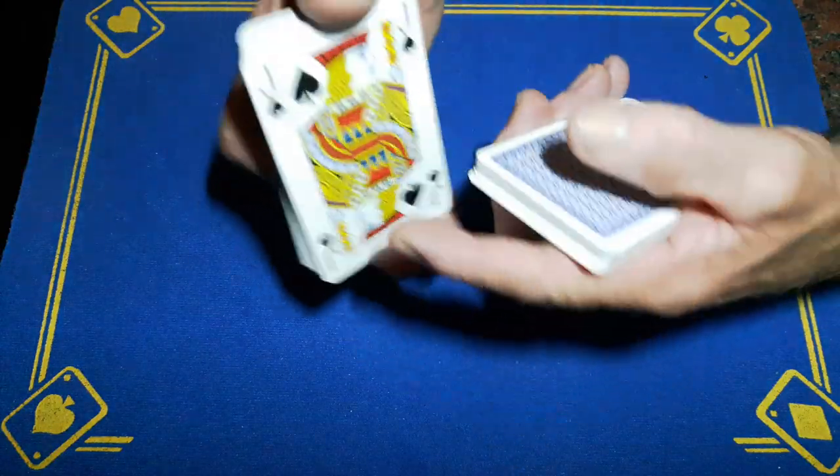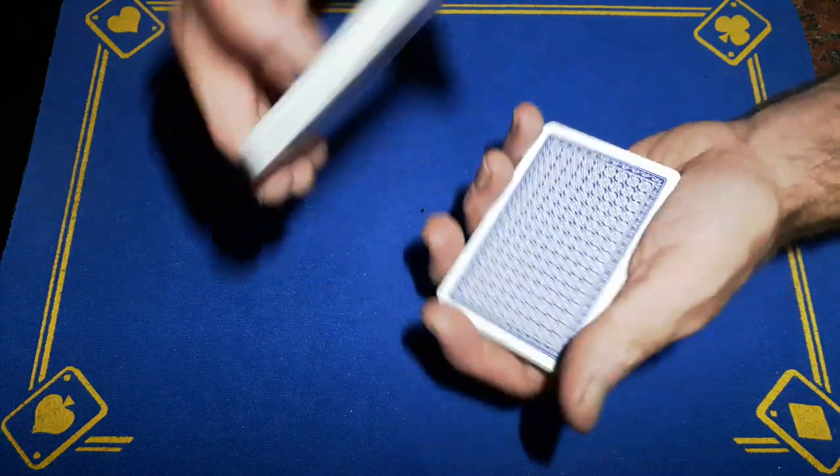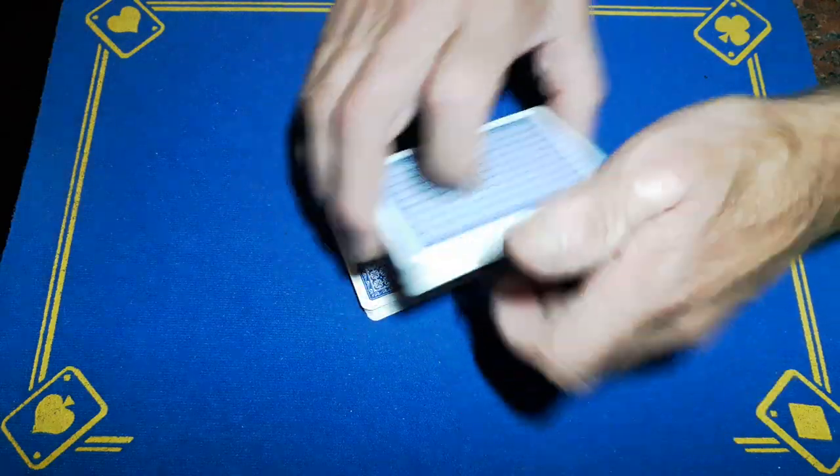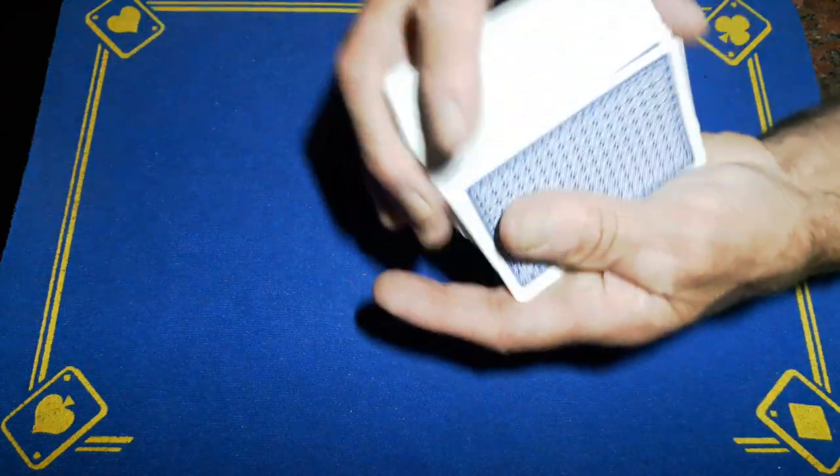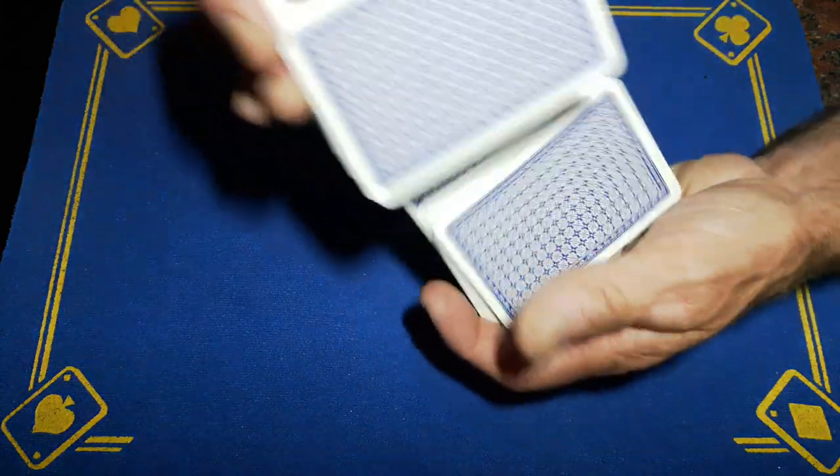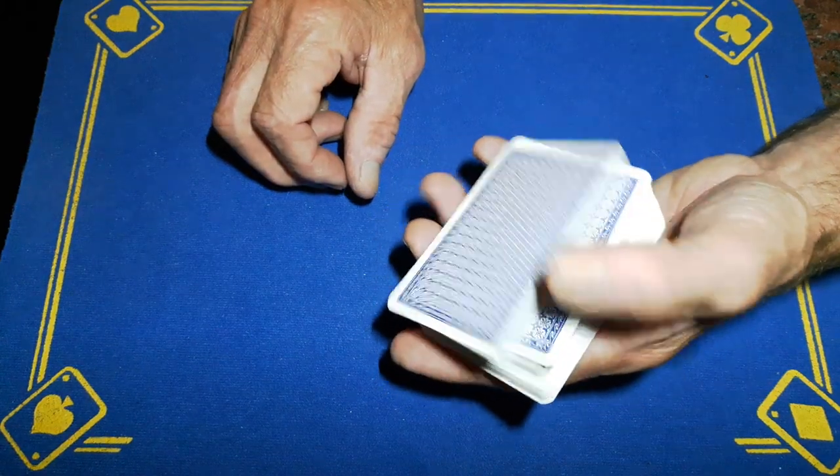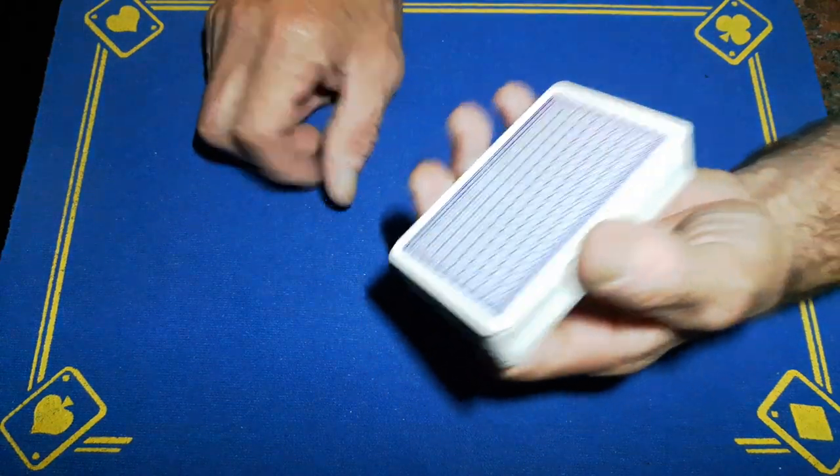So these cards can be cut as many times as you like. You could even give it a bit of a fake shuffle like this if you want. But at some point, if you're holding the card in this sort of grip and just release your grip, the cards will fall and your thumb will naturally hold that break where that jack is.